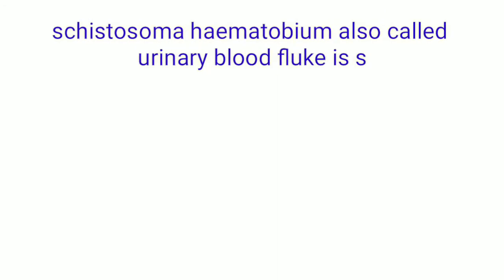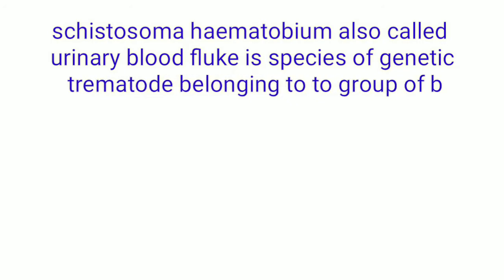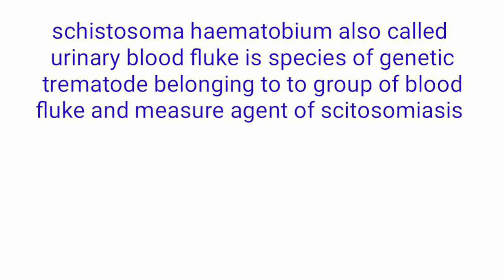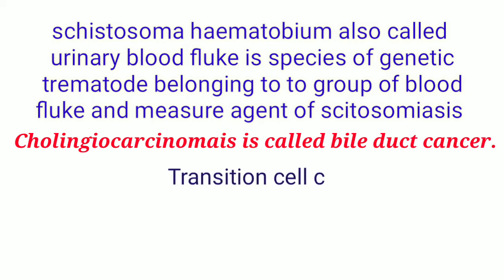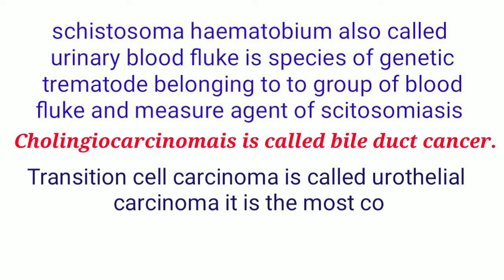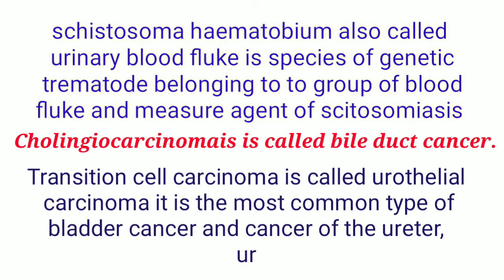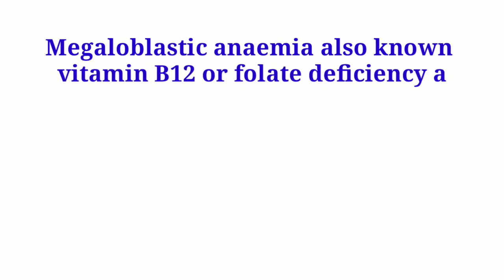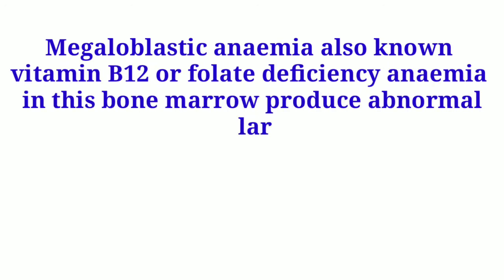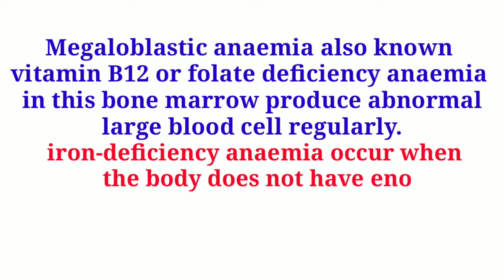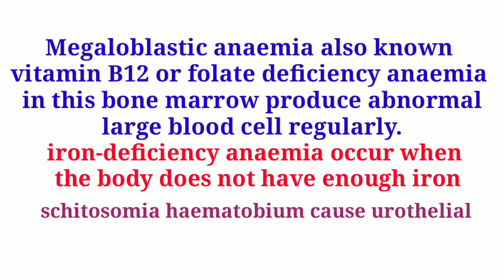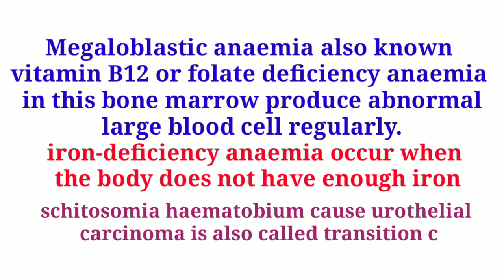Schistosoma haematobium, also called urinary blood fluke, is a species of digenetic trematode belonging to the group of blood flukes and is a major agent of schistosomiasis. Cholangiocarcinoma is called bile duct cancer. Transitional cell carcinoma, also called urothelial carcinoma, is the most common type of bladder cancer and cancer of the ureter, urethra, and urachus. Megaloblastic anemia is also known as vitamin B12 or folate deficiency anemia, where bone marrow produces abnormal large blood cells. Iron deficiency anemia occurs when the body does not have enough iron. Schistosoma haematobium causes urothelial carcinoma, also called transitional cell carcinoma.